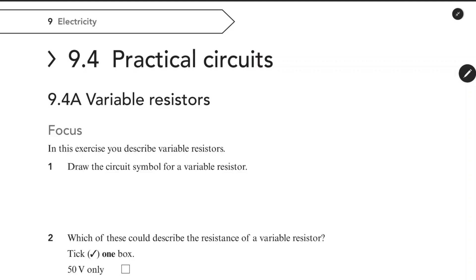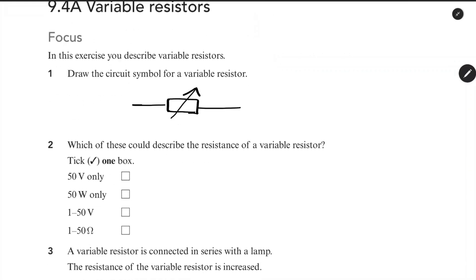First question in this exercise, you describe Variable Resistors. Draw the circuit symbol for the Variable Resistor. Let's draw a symbol. First, there is a rectangular box, then you can draw an arrow. That is the Variable Resistor symbol.